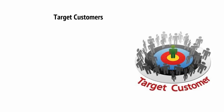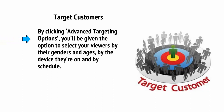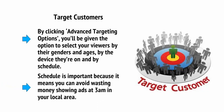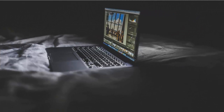Targeting allows you to specifically target the type of person you want for your ads even more. By clicking Advanced Targeting Options, you'll be given the option to select your viewers by their genders and ages based on their Microsoft accounts, by the device they're on — perhaps if you're selling an app you might want to target mobile devices — and by schedule. Schedule is important because it means you can avoid wasting money showing ads at 3am in your local area. It also means you can get even sneakier and, for example, show ads only later in the evening. As it gets later and we become tireder, we actually become more impulsive and thus more likely to click buy on an advert.